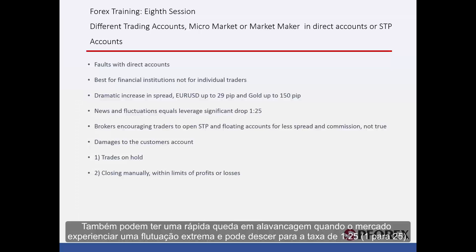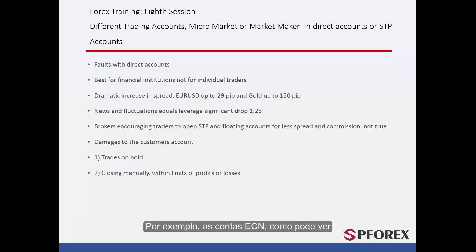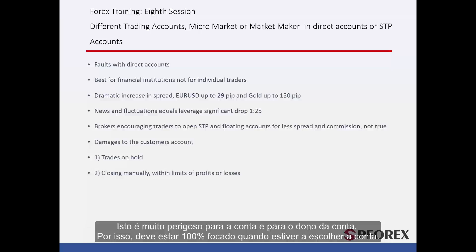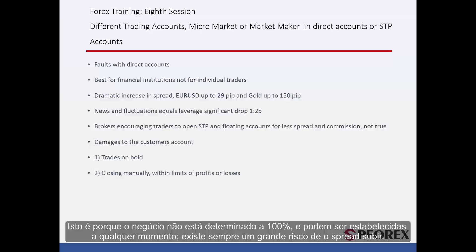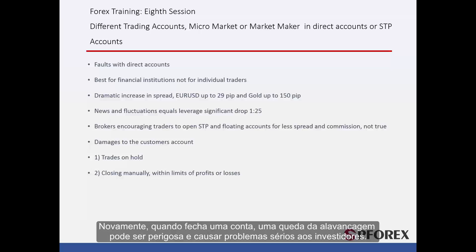These accounts can also have a rapid drop in leverage when the market is experiencing extreme fluctuation, decreasing to a ratio of 1 over 25. In ECN accounts, the leverage value is not constant and can drop at any time, which is very dangerous for the account and the account holder. You should be 100% focused when choosing an account. The most dangerous time is when a party has a pending order, as orders have not been fully determined yet and can be established at any time. There is always a huge risk that the spread will go up, and a leverage drop when closing an account can cause serious problems for investors.